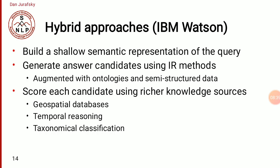In the hybrid approach, the best example is IBM Watson. This combines both IR-based and knowledge-based systems. Here we build a shallow semantic representation of the query, then generate candidate answers using IR methods. We create a small set of semantic representations, use the IR system to get a candidate list, and then using semantic representation we select the final, most relevant answer. Both the knowledge-based system and IR-based system are used together, with predefined databases helping to find the exact answer.